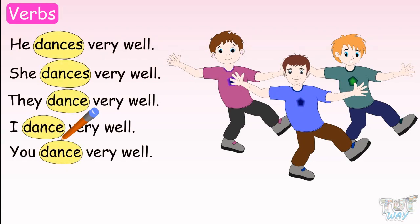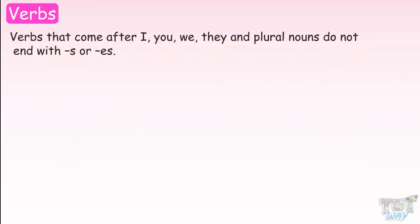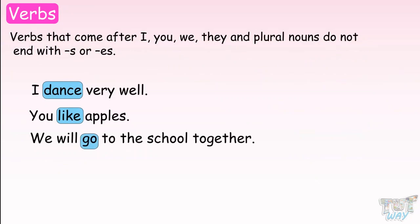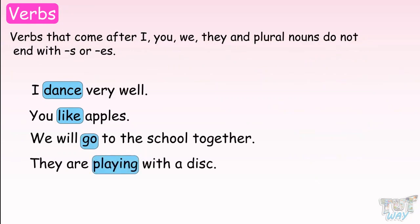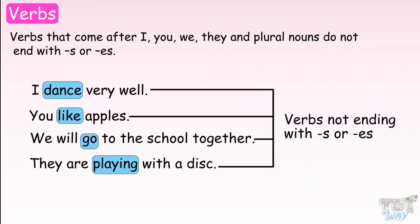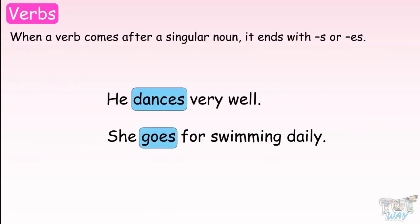Let's learn the reason behind it. Verbs that come after I, you, we, they, and plural nouns do not end with S or ES. When a verb comes after a singular noun, it ends with S or ES.